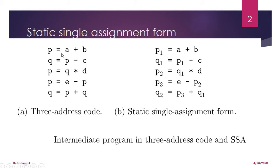Consider this example: p equal to a plus b, q equal to p minus c, p equal to q star d, p equal to e minus p, q equal to p plus q. Given this three-address code, we will see how to generate the static single assignment form.